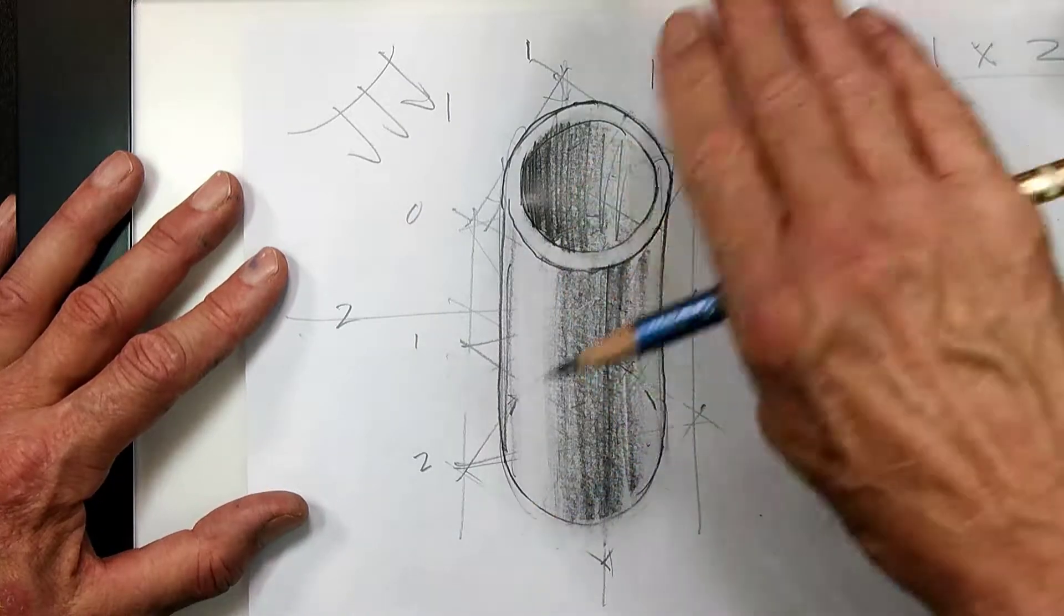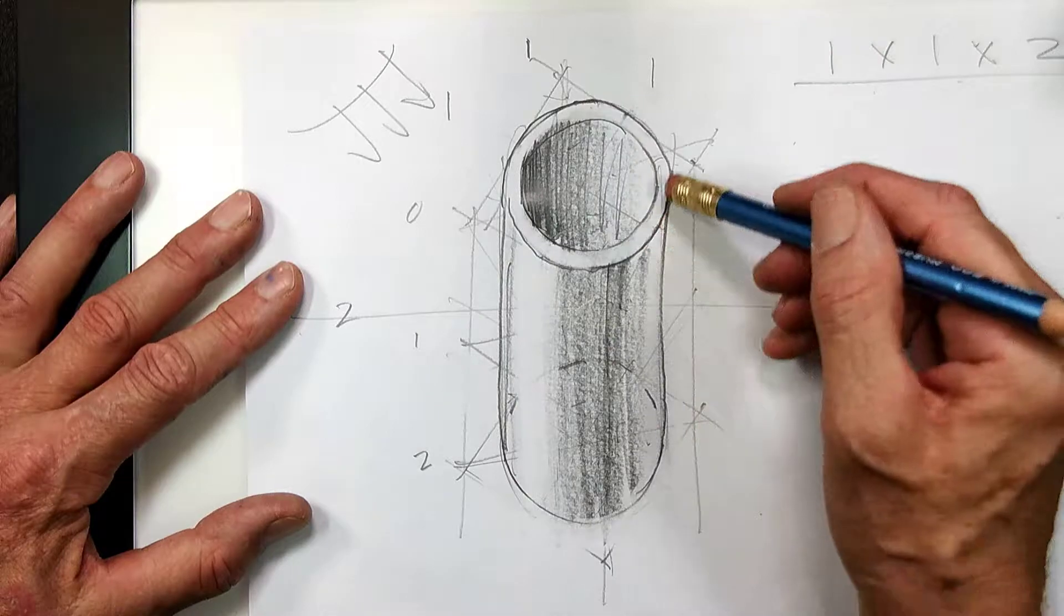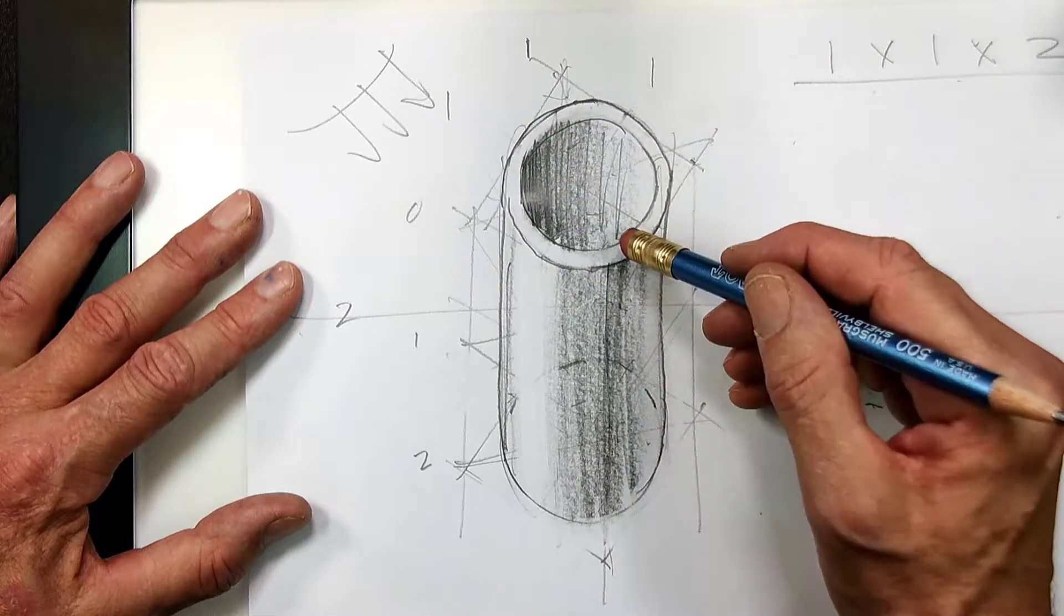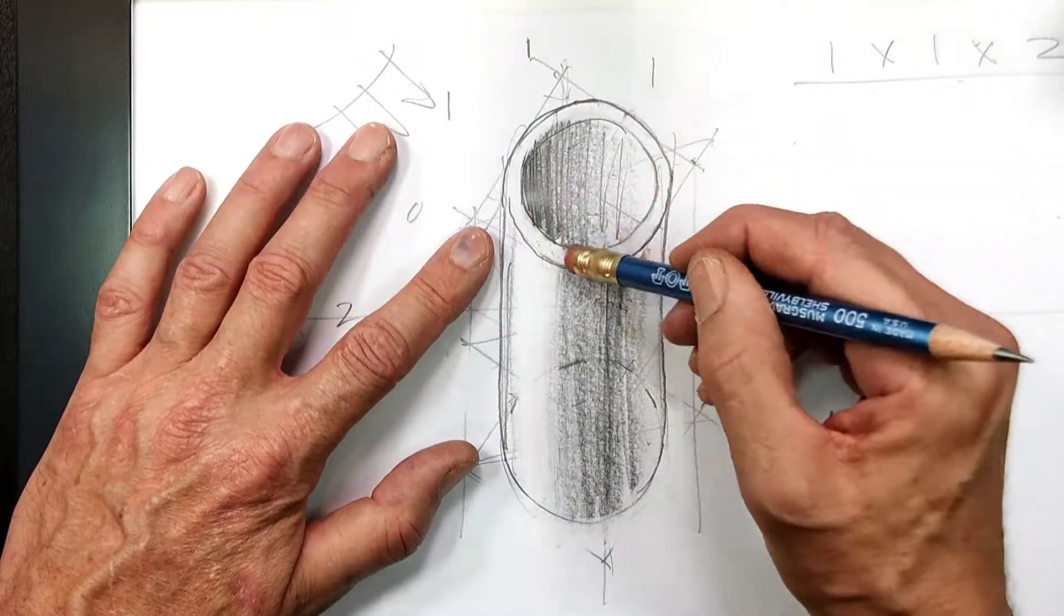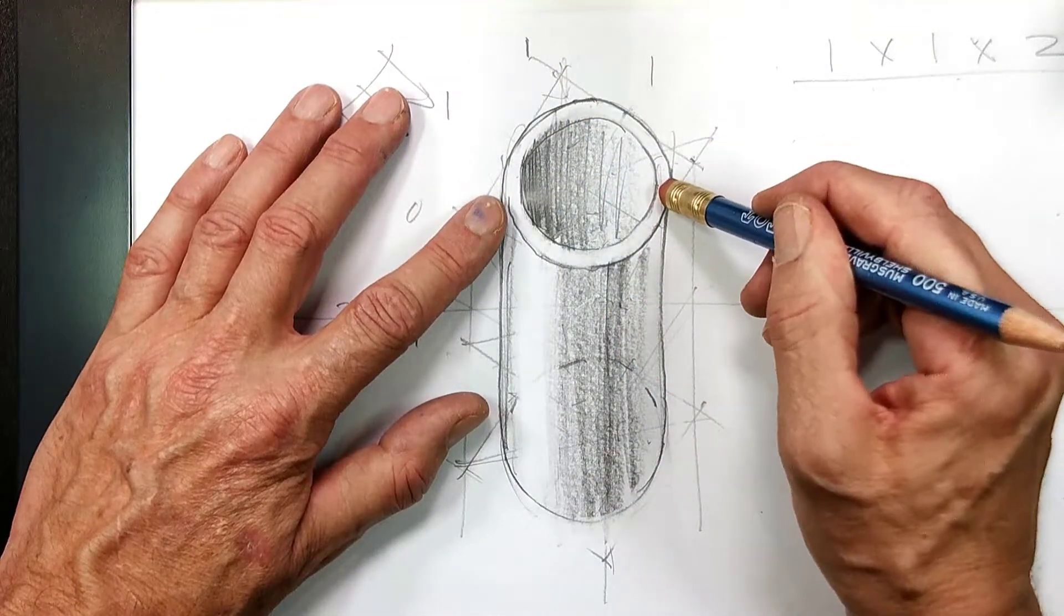And remember that with a top oblique, or within the oblique, you want to take the plane that has the most detail or interest and make that the true shape. And that's why the circle here, the top, is a true shape.